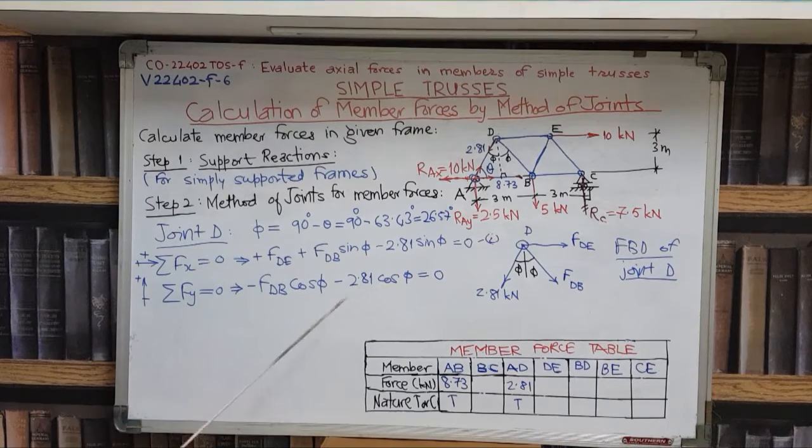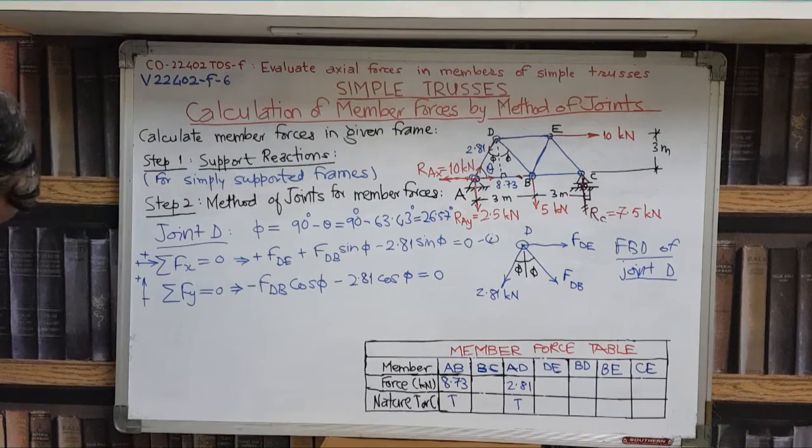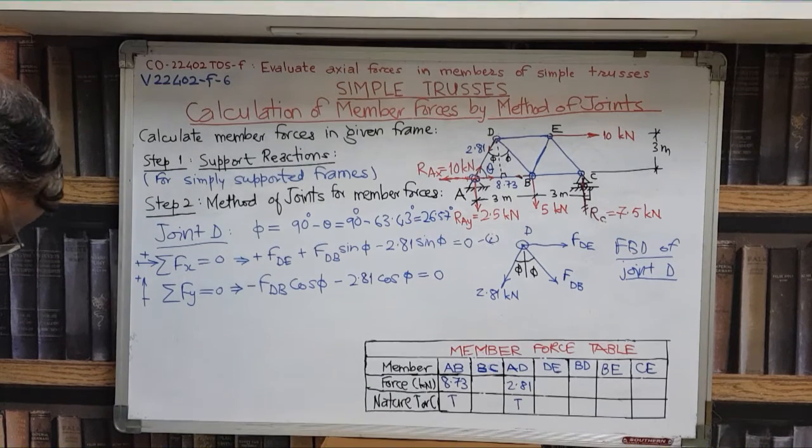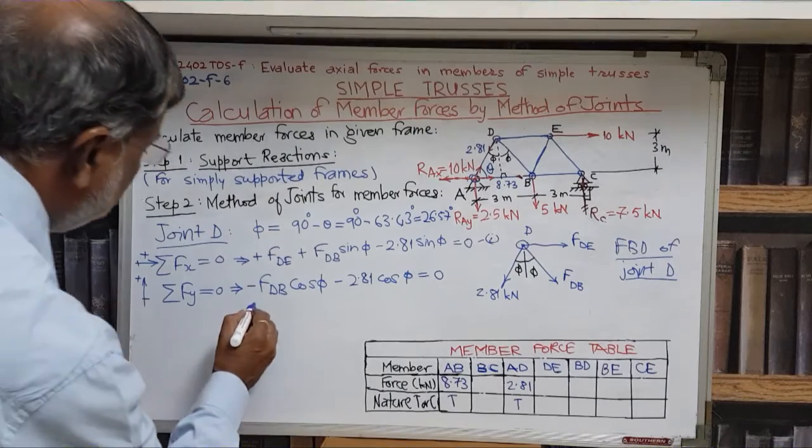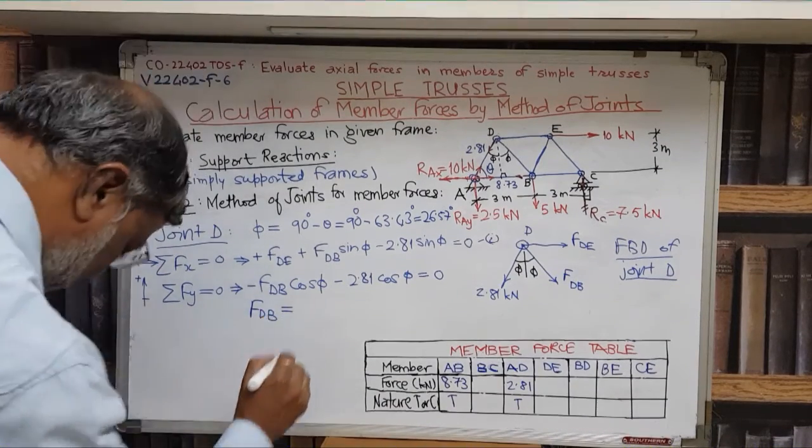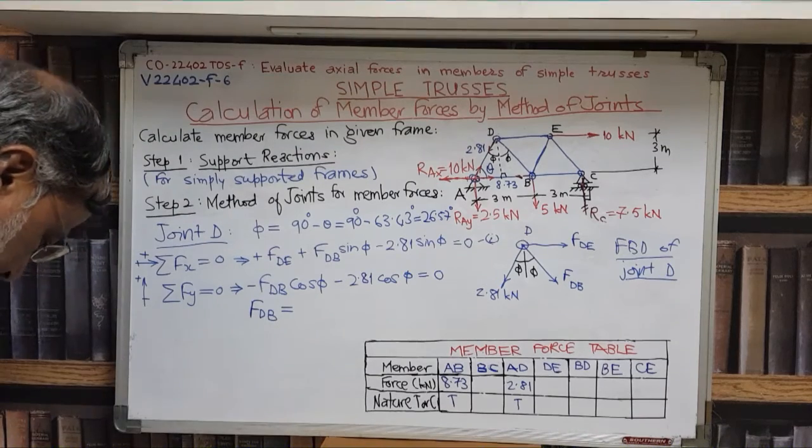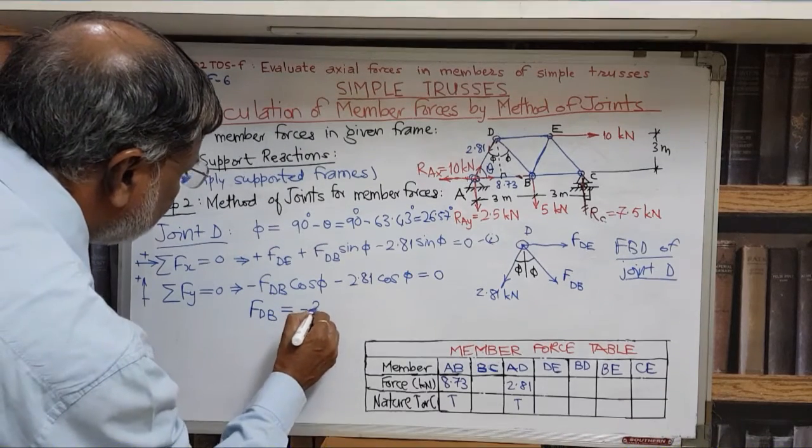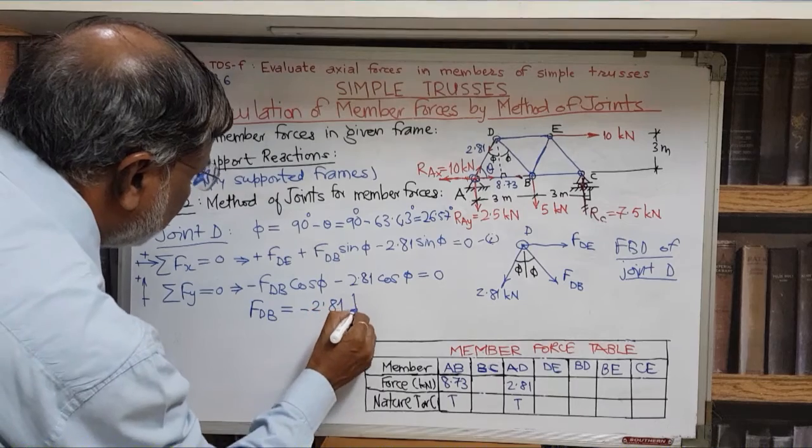The third force 2.81 kilonewton is oblique, so it will have a y component which will also be minus 2.81 cos phi. This will be equated to zero. From this we can calculate, and the value of FDB will be minus 2.81 kilonewton.